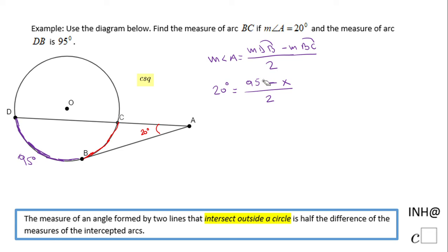So now you notice I have an equation and the easiest way to solve this equation is to multiply by 2 both sides. And we have 2 times 20 which is 40 equals, and on the right side you have 95 minus X.